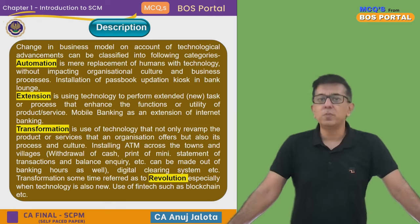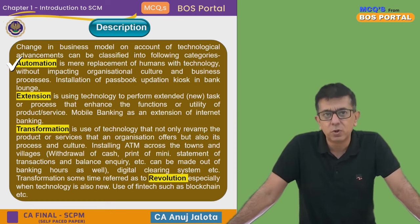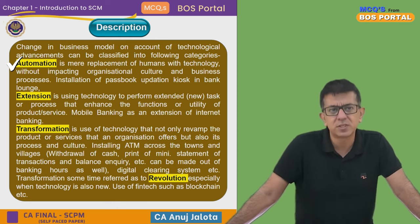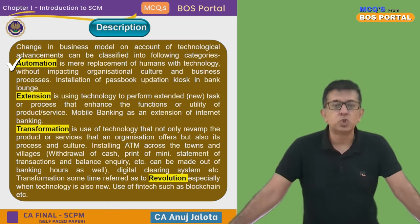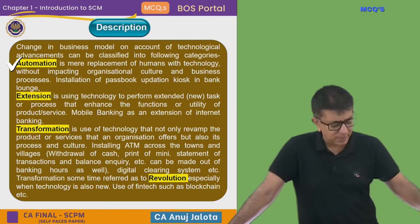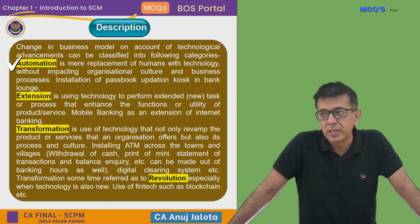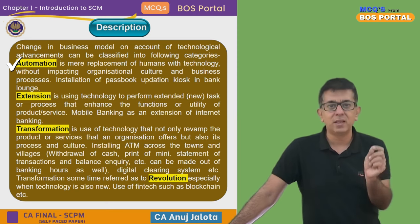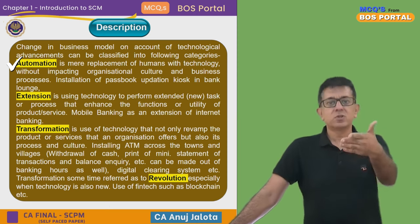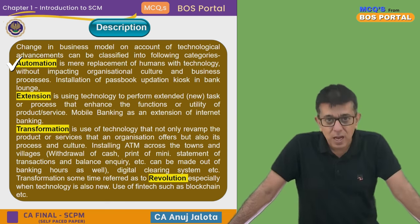Let me start my explanation. What do you mean by Automation? It's a simple term used a lot — it is the mere replacement of human beings with technology without impacting the organization's culture and business processes. Example: installing a passbook updation kiosk in a bank lounge. When my dad was in Bank of India, he started as a passbook writer around the 1960s. People with passbooks would go to the bank and staff like him would write down the transactions that had happened in the passbook.